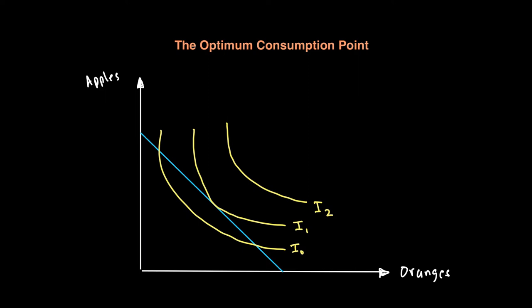Let's also name some of these points for our analysis. Let's call this point R, this point S, and this point T. Points R, S, and T are on the same budget line, which means all of these points are affordable.